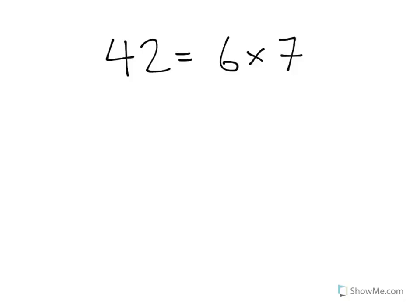In this video, we're going to look at multiplication equations as comparisons. What does this equation down here really mean? It says 42 equals 6 times 7. What does that mean? Well, let's write it out. It means that 42, the number 42, is 6 times more than the number 7.